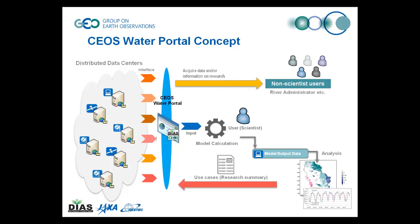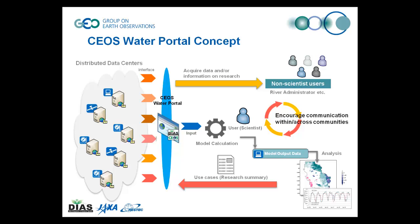Non-scientist users like decision makers and officials, such as river administrators, can find the research and may contact the scientists for further information, or possibly about solving a specific problem they are facing. This feedback loop enhances communication within and across communities in industrial domains.